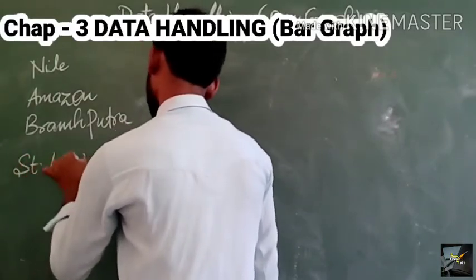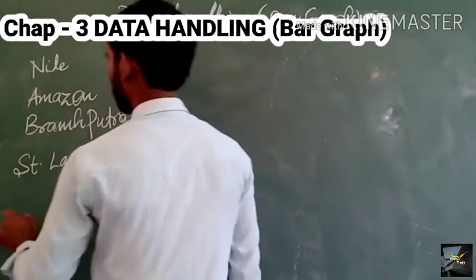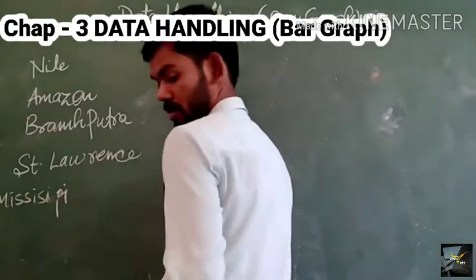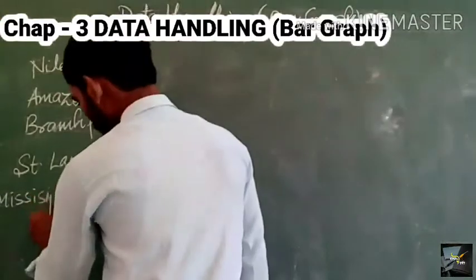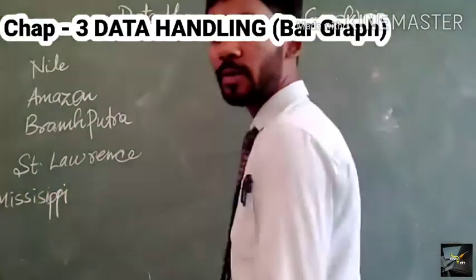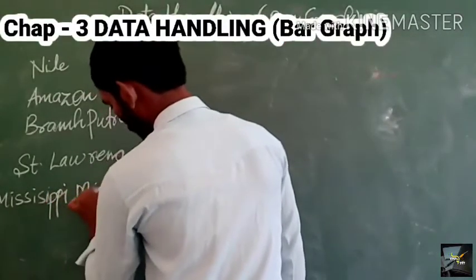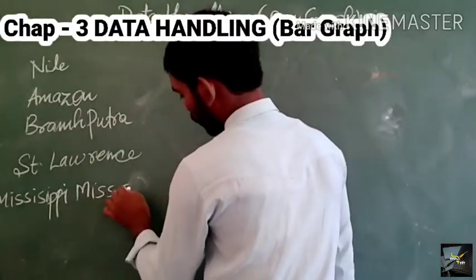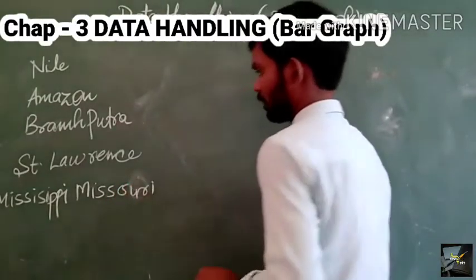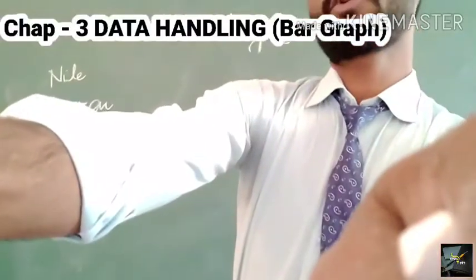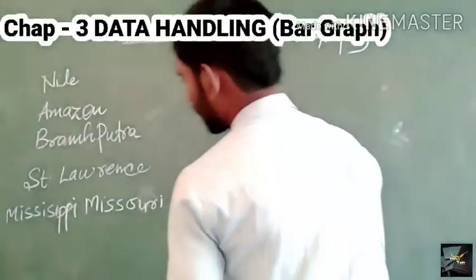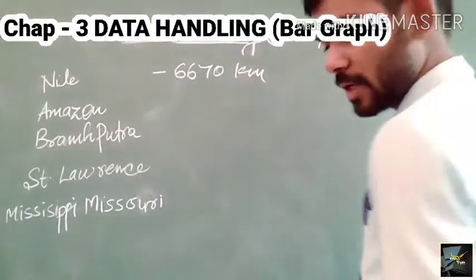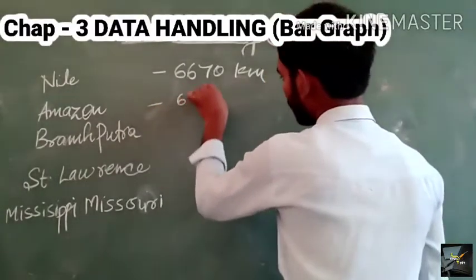The rivers also include St. Lawrence and Mississippi Missouri. Mississippi Missouri is the largest river found in America. These rivers have their lengths as follows: Nile is 6670 kilometers and Amazon is 6280 kilometers.